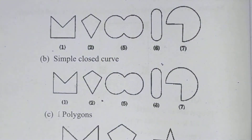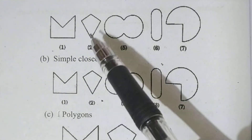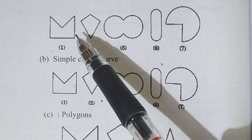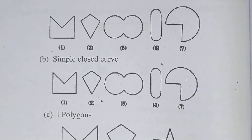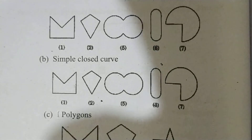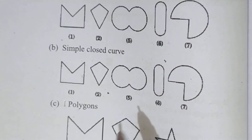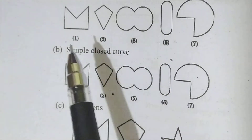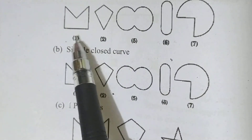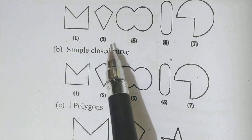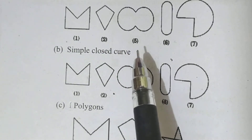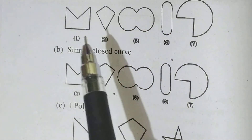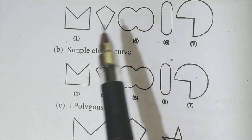Now, first, all these figures are simple curves. Figures 1, 2, 5, 6, and 7 — all these figures belong to simple curves.